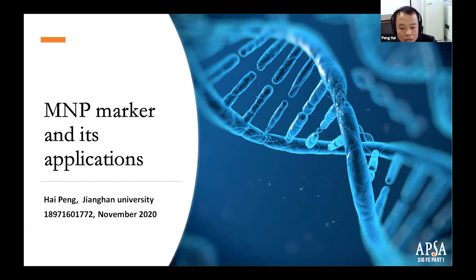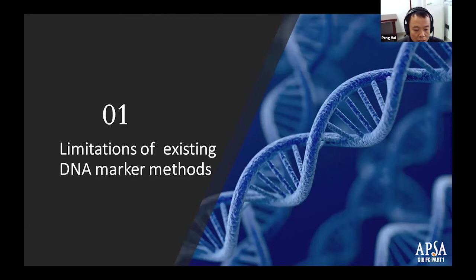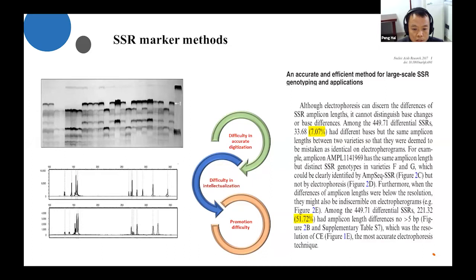Hello everybody. I'm very glad to have the chance to introduce my work to you. The title of my presentation is the MMP marker and its applications. Our main work is about plant identification using DNA markers. MMP marker is a kind of DNA marker and it is invented by us. Let me first say the limitations of the existing DNA marker methods. There are two kinds of DNA marker methods: SSR marker methods and SNP marker methods. For plant or variety identification, SSR marker method is the main type.